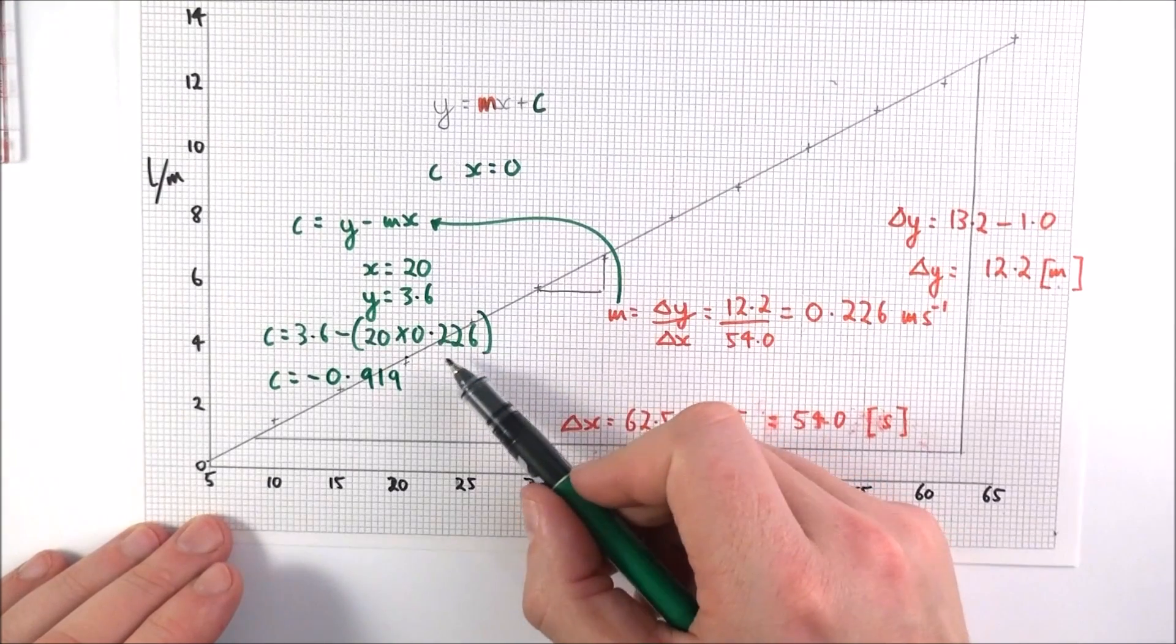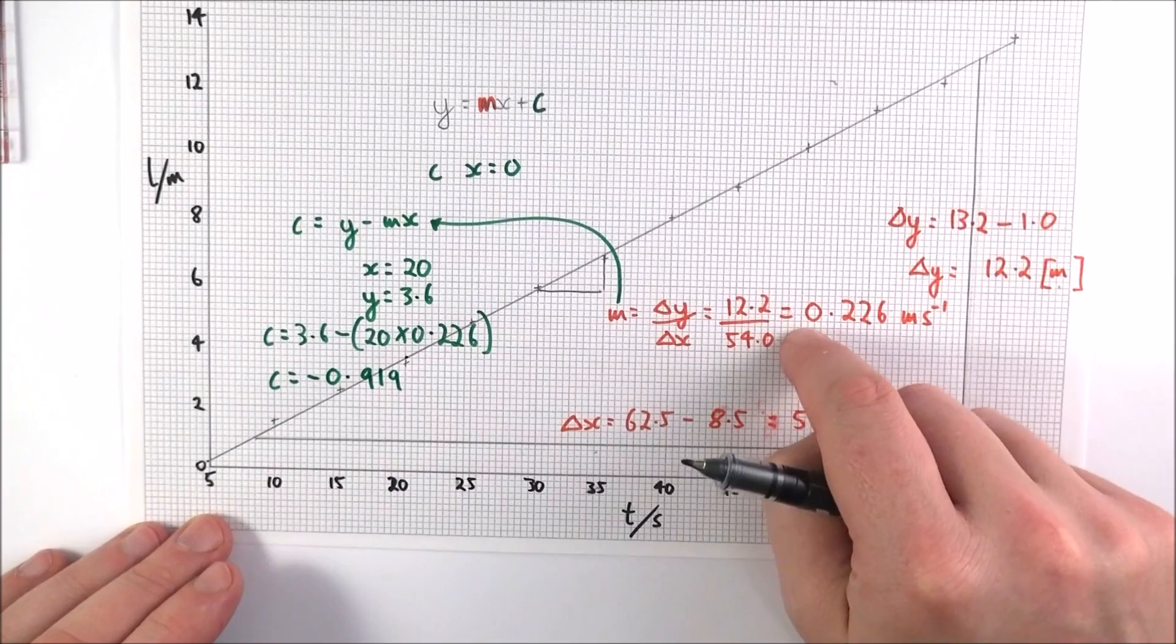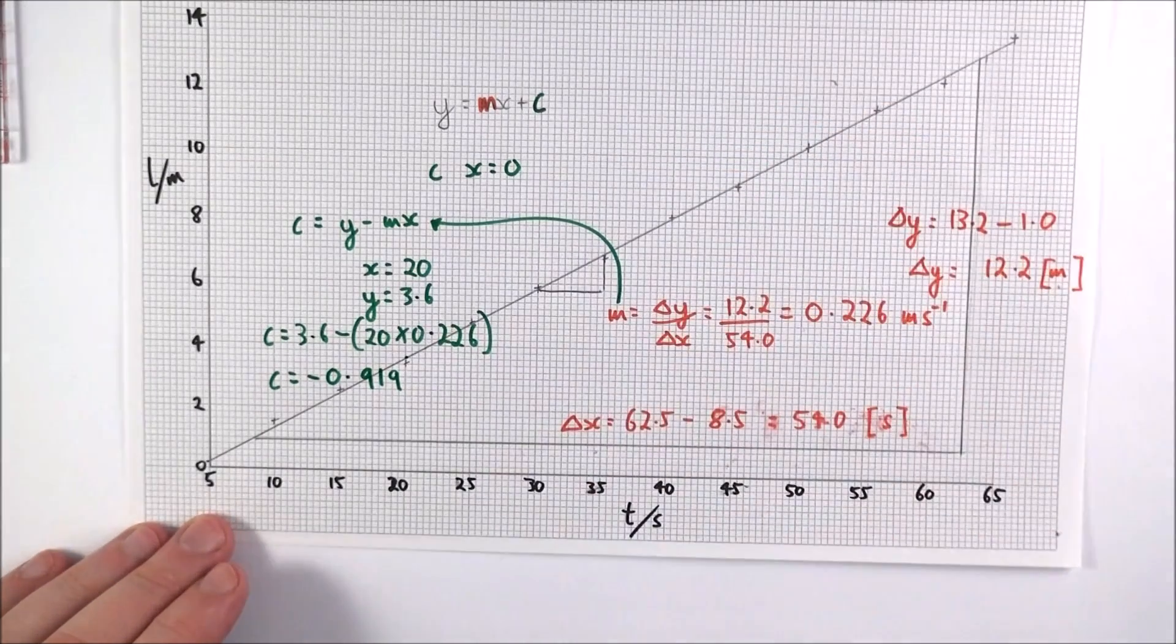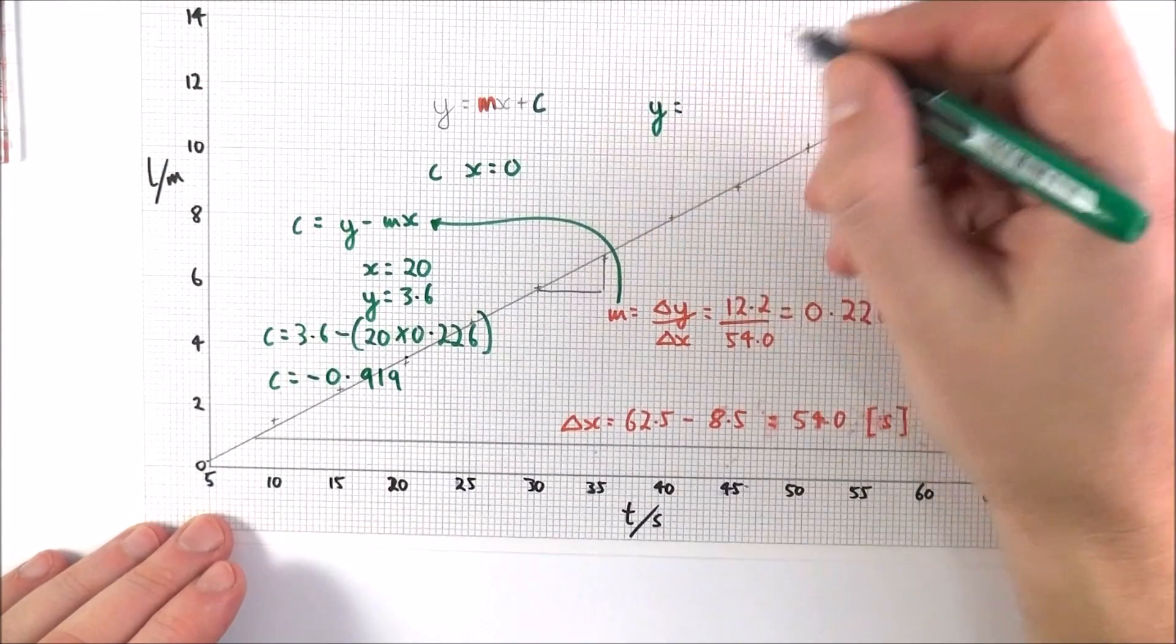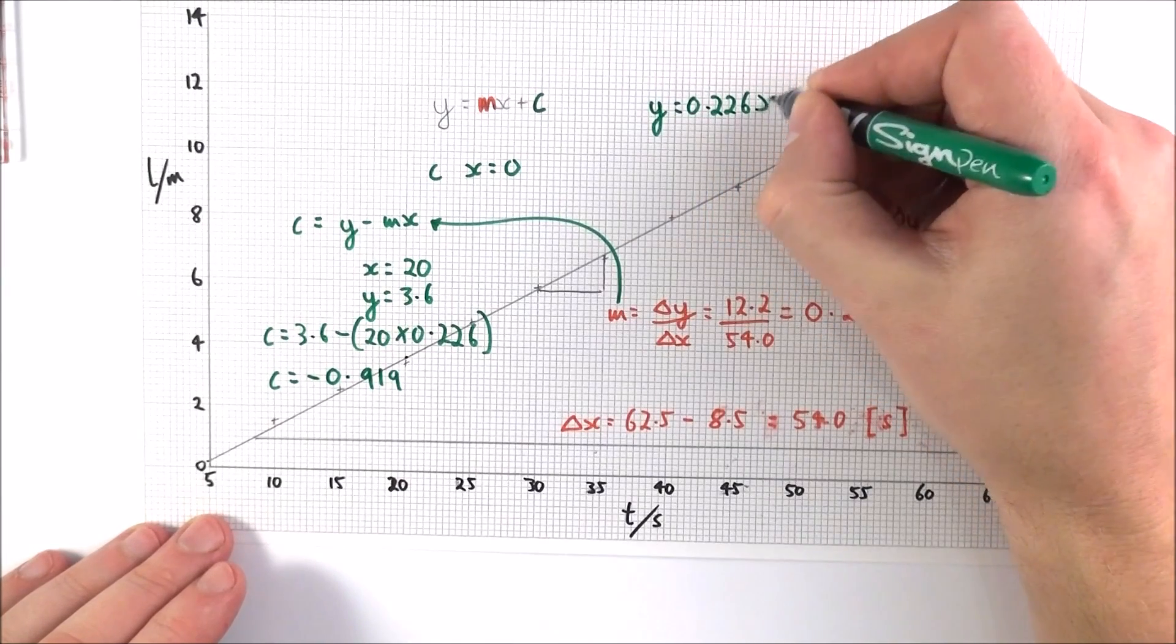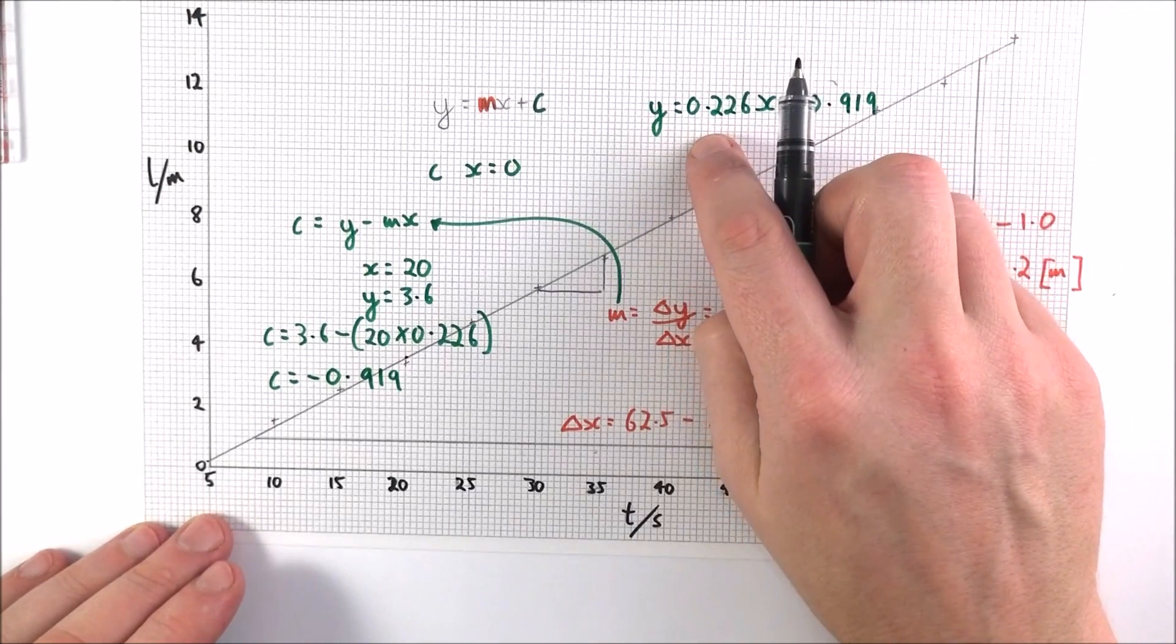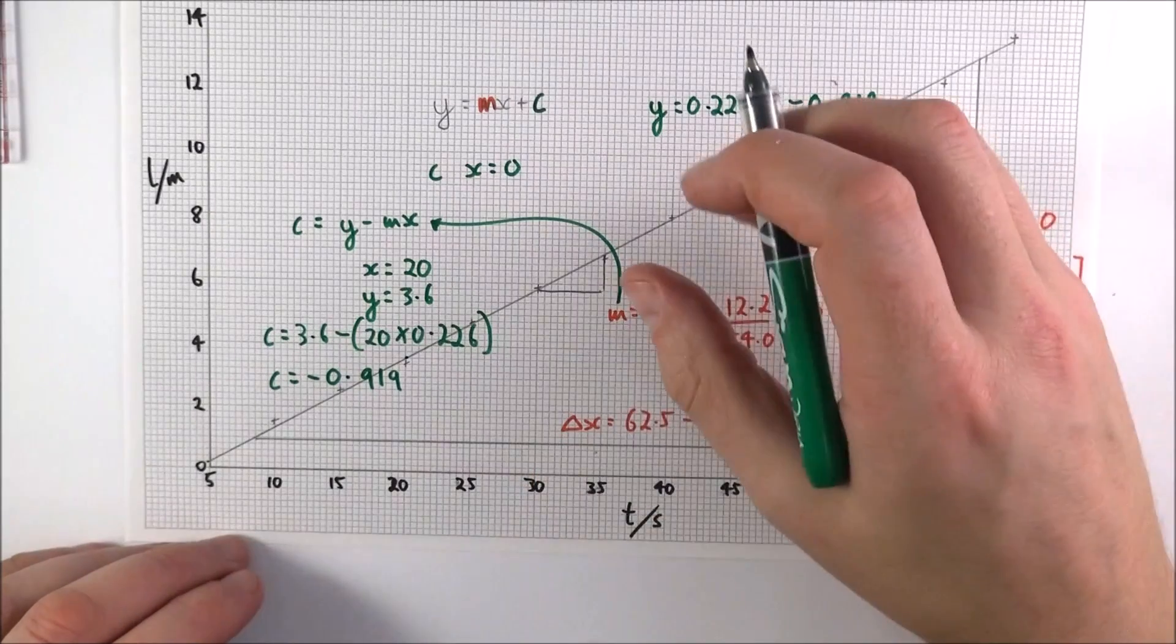And actually the value I used for my gradient wasn't maybe the value I wrote down here, but the actual number stored on my calculator, so I didn't round down too early. So that means this line here has a value of y is equal to 0.226x minus 0.919. And that is now using our values for m and c that we found from this data. So I hope that helps.